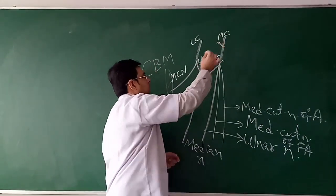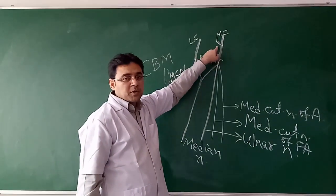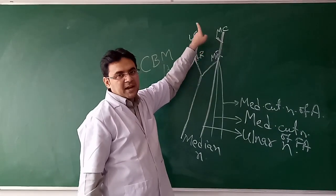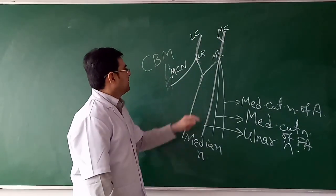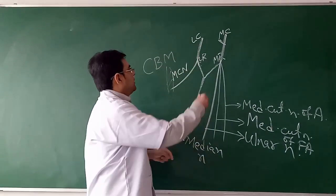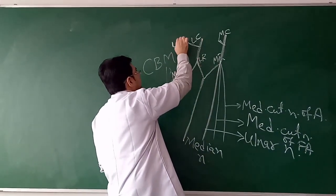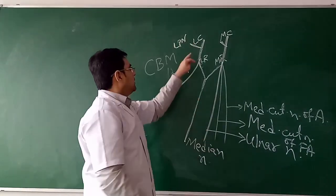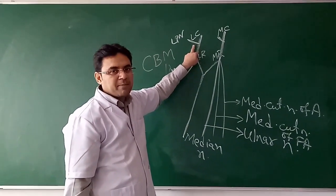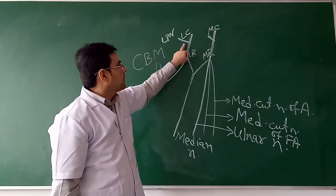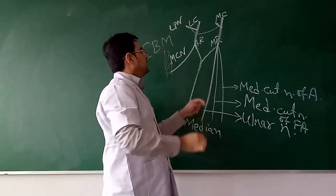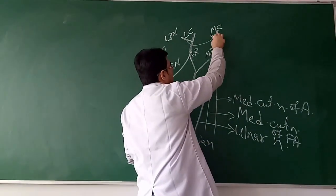The medial cord also gives a branch which is the medial pectoral nerve. The medial pectoral nerve pierces the pectoralis minor muscle, supplies it, and then goes to supply the pectoralis major muscle. Likewise, there is a pectoral nerve given off from the lateral cord which is the lateral pectoral nerve. There is a communicating branch between the medial pectoral and lateral pectoral nerves.